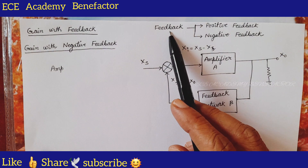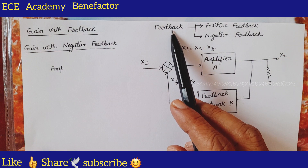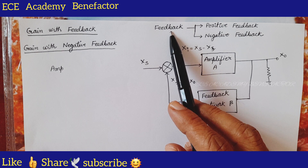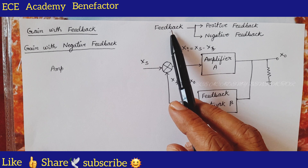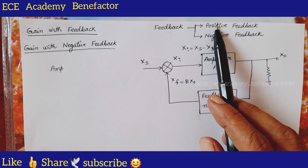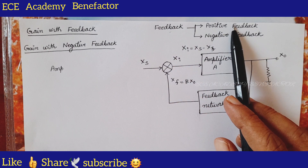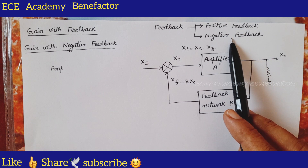Feedback is a process of injecting a part of output back to the input. There are two types of feedback: positive feedback and negative feedback. Positive feedback is used in oscillators and negative feedback is used in amplifiers for the stability of gain.